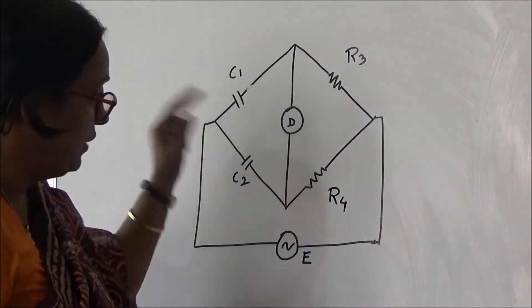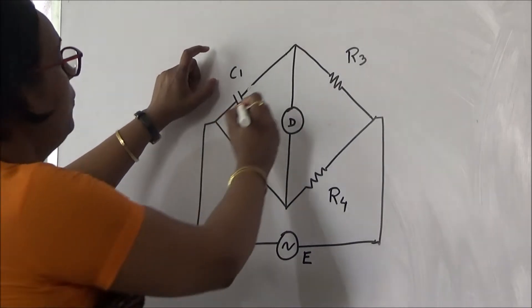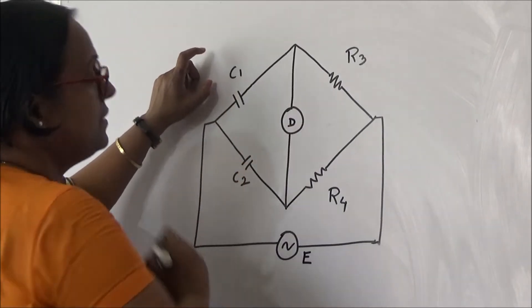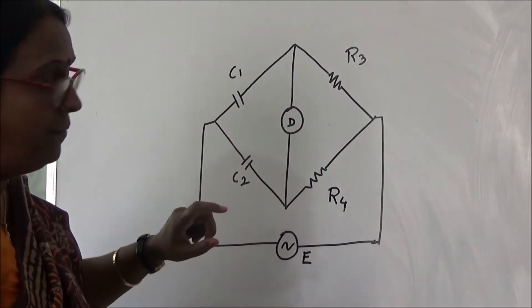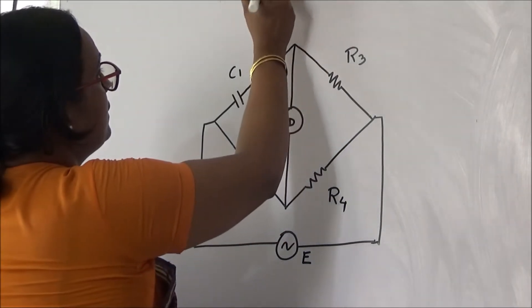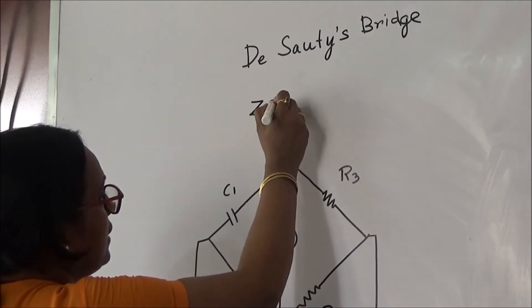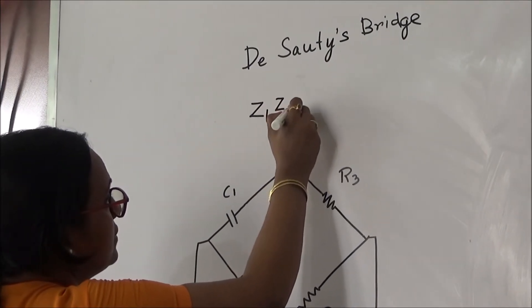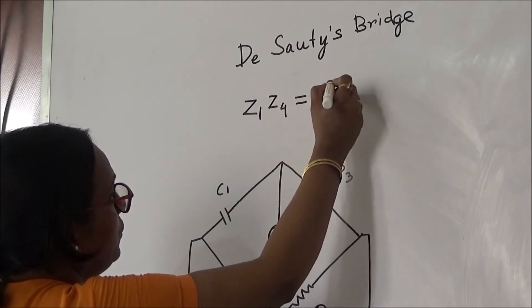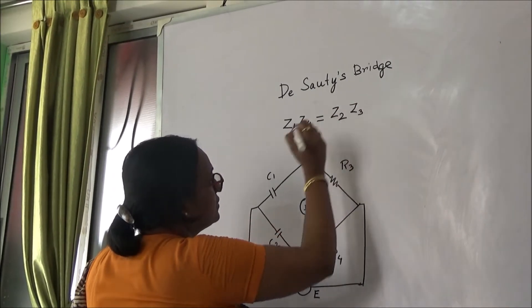As we know, in any bridge the impedance product of opposite arm impedances will be equal. That is, for any bridge when the bridge is balanced, Z1·Z4 must be equal to Z2·Z3.